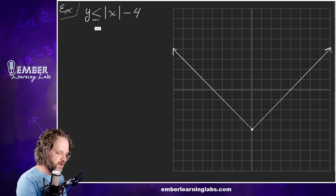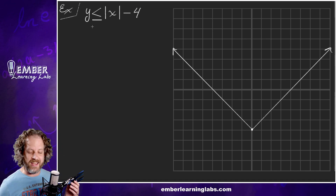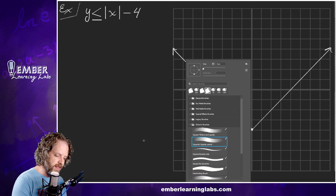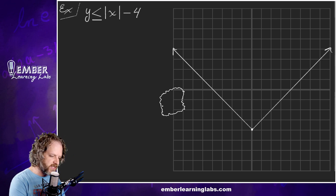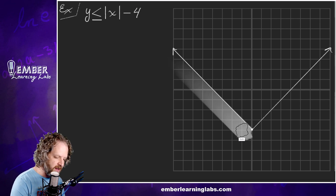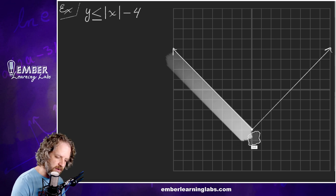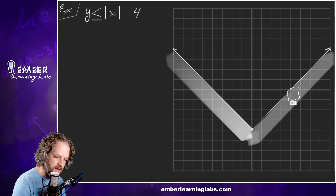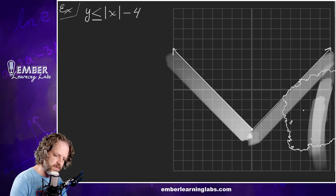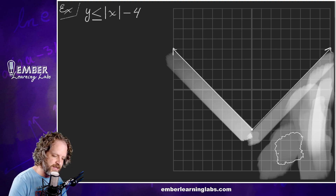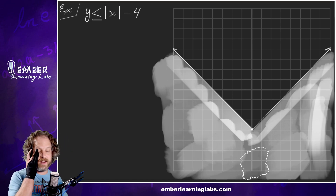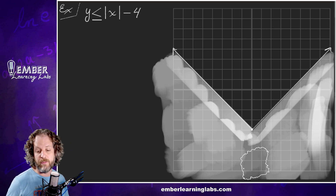I'm going to change that to a less than. In this case, we're going to shade below the line this time — below instead of above — because this time it is less than. So we're going to shade down here, below the line.